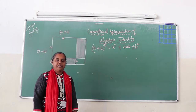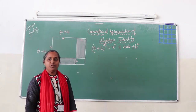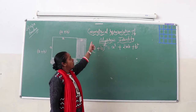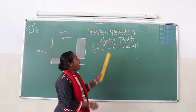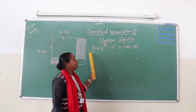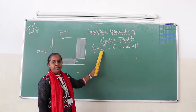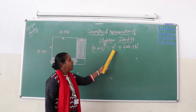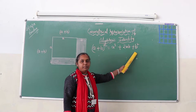Good afternoon. This is Jayathi Kotaruk from Global Indian International School, Chinchua. Today we are going to talk about geometrical representation of algebraic identity. I am taking the first identity, that is: a plus b, the whole square, is equal to a squared plus 2ab plus b squared.